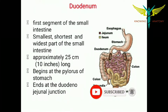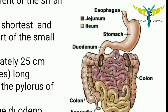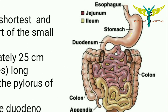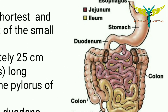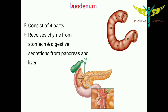Welcome back. In this video, let's learn about the histology and basic structure of the duodenum. The duodenum is the first segment of the small intestine. It is the smallest, shortest, and widest part of the small intestine, approximately 25 centimeters — that is 10 inches — long. It begins at the pylorus part of the stomach, that is after the pyloric sphincter.